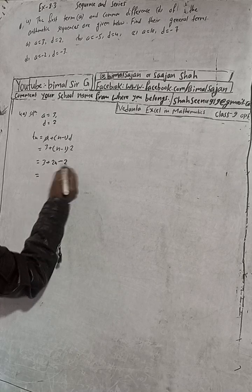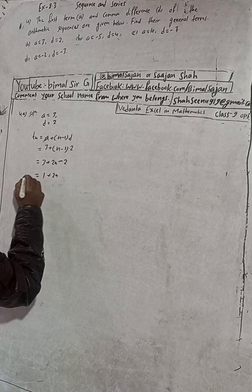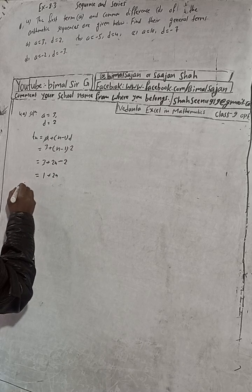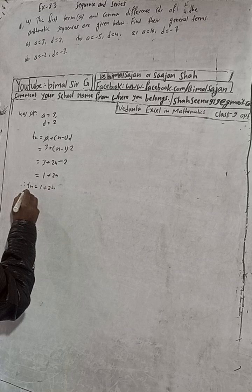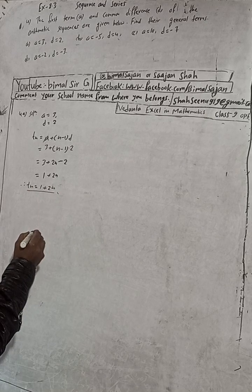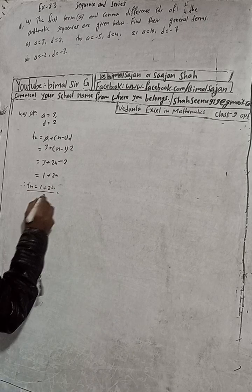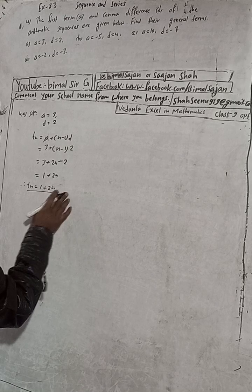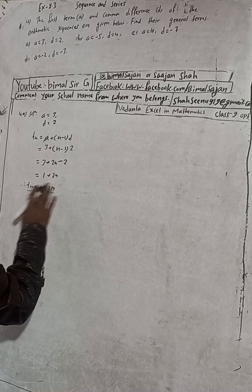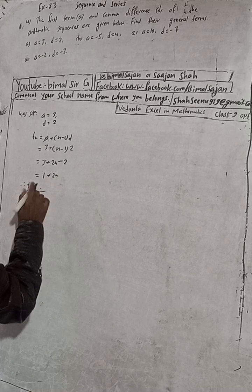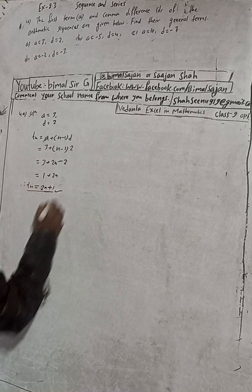This simplifies to 3 minus 2 which is 1, plus 2N. So the general term Tₙ = 1 + 2N. In the book they have written 2N + 1 first — you can write it like that also. So 2N + 1 is also the answer.